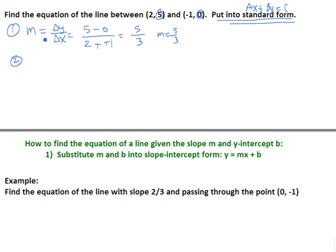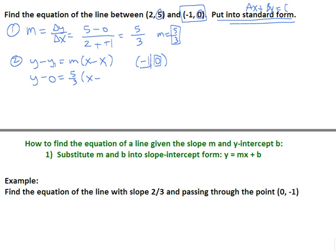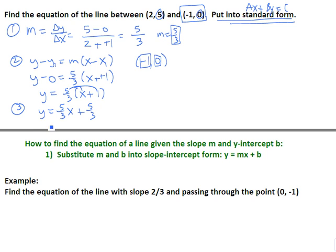In step 2, we use point-slope form: y minus y1 equals m times (x minus x1). I'll use the point (−1, 0) since it has a zero. My y1 is 0, m is 5/3, and x1 is −1. We get a double negative in the parentheses, and y minus 0 just becomes y. So y equals 5/3 times (x plus 1). Distributing: 5/3 x plus 5/3.